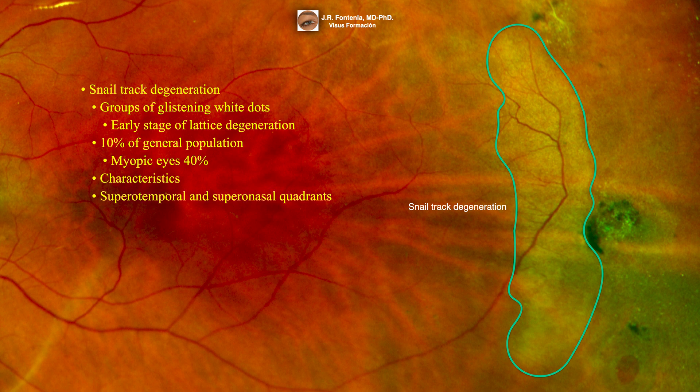More often in superior quadrants — superior temporal and superior nasal quadrants. Histologically, this lesion consists in a degeneration of the neural elements of retina, leading to an atrophy of the tissues with lipid deposits in the internal retinal layers.